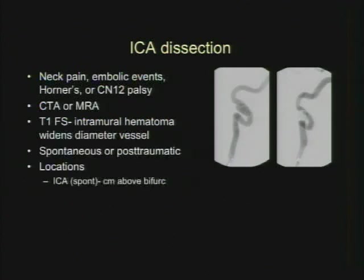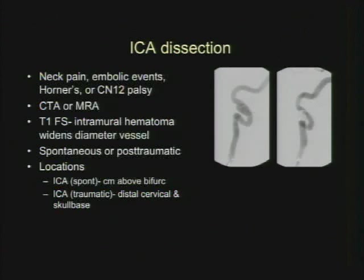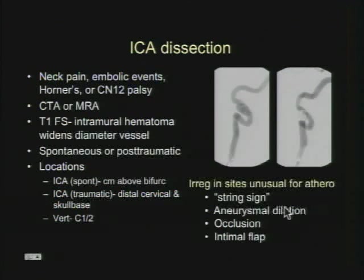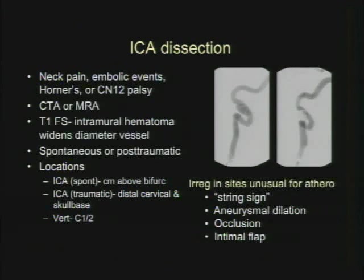The common location for spontaneous dissection is several centimeters above the bifurcation, unlike atherosclerosis which you normally see at the bifurcation. For traumatic pseudoaneurysms, you can see pseudoaneurysms in the distal cervical carotid and often at the skull base from fractures through the carotid canal. For the vertebral artery, look at C1-C2. Suggest dissection whenever you see irregularity in sites unusual for atherosclerosis — it can present as a string sign, luminal narrowing, aneurysmal dilatation, occlusion, or intimal flap. Here's a case of dissection with pseudoaneurysm in the cervical carotid — this is post-traumatic, and this is post-coiling.